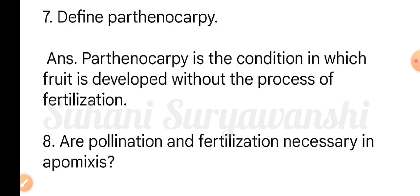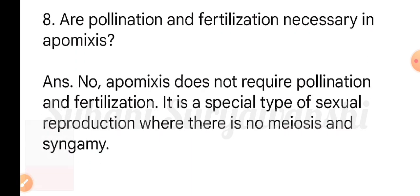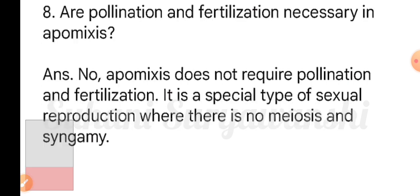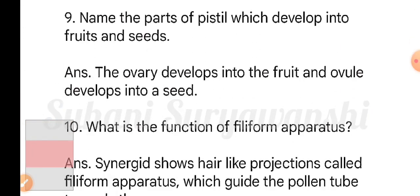Question seven: define parthenocarpy. Parthenocarpy is a condition in which fruit is developed without the process of fertilization. Question eight: are pollination and fertilization necessary in apomixis? No, apomixis does not require pollination and fertilization. It is a special type of sexual reproduction where there is no meiosis and syngamy.